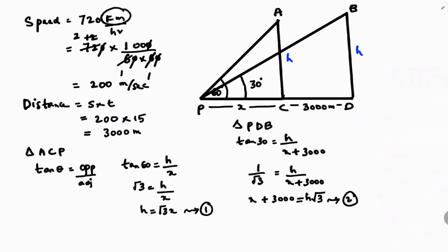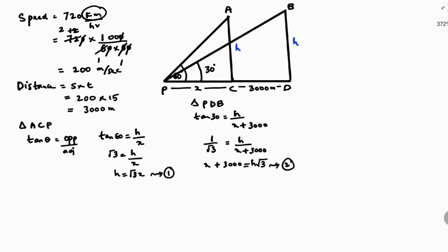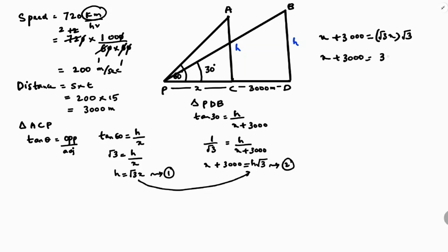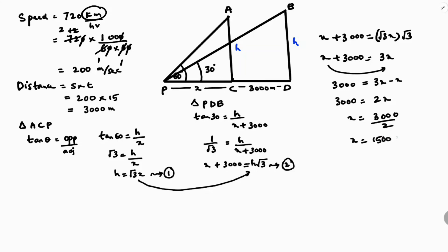Now I'll solve equations 1 and 2. Substituting h = √3·x into equation 2: x + 3000 = √3·x·√3 = 3x. Transposing x to the right side: 3000 = 3x − x = 2x. Therefore x = 3000/2, so x equals 1500 meters.